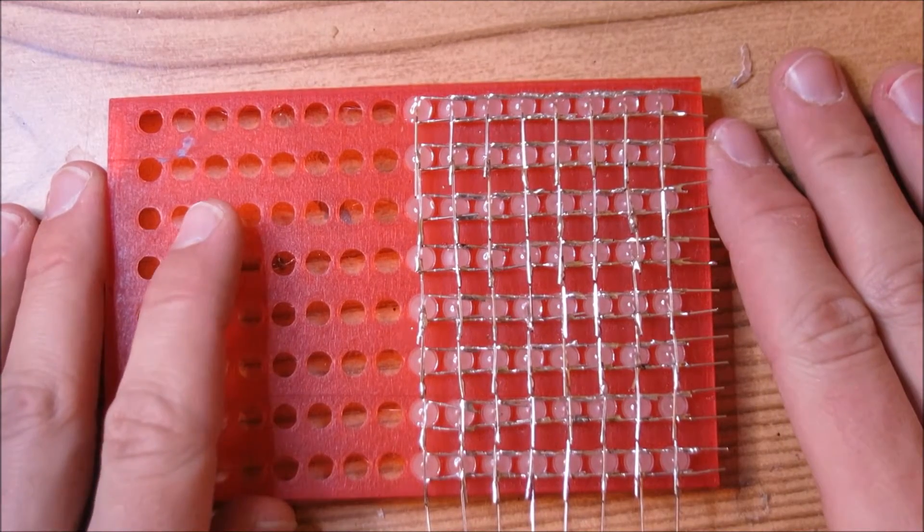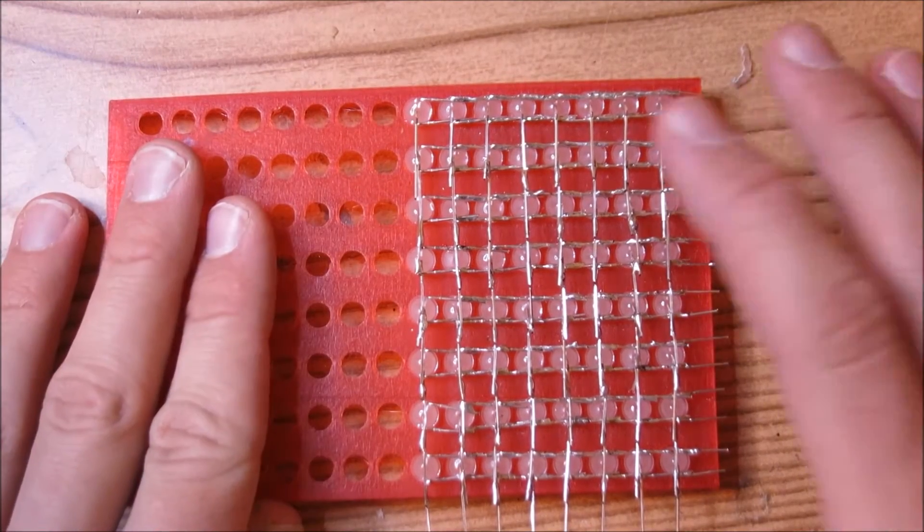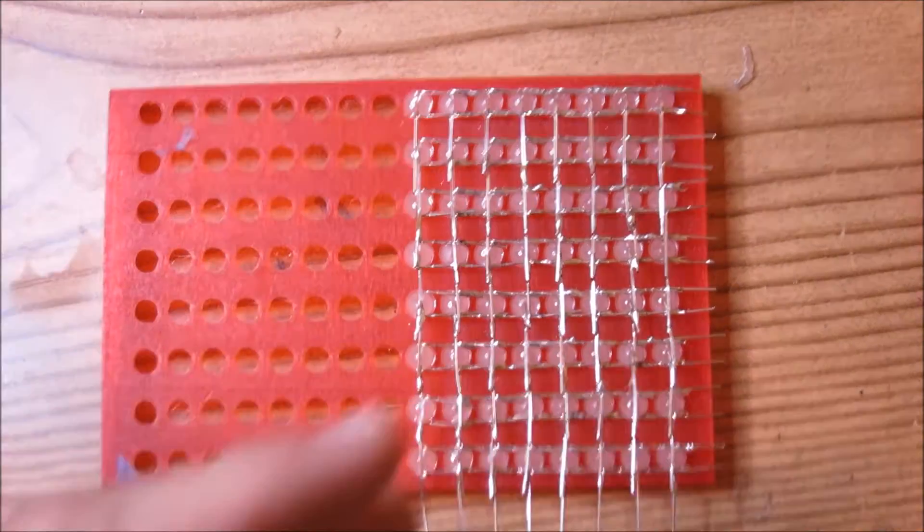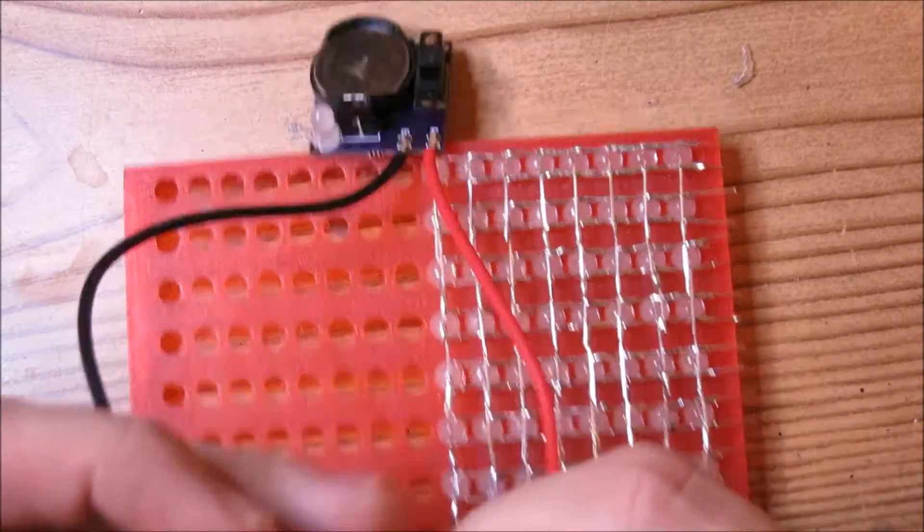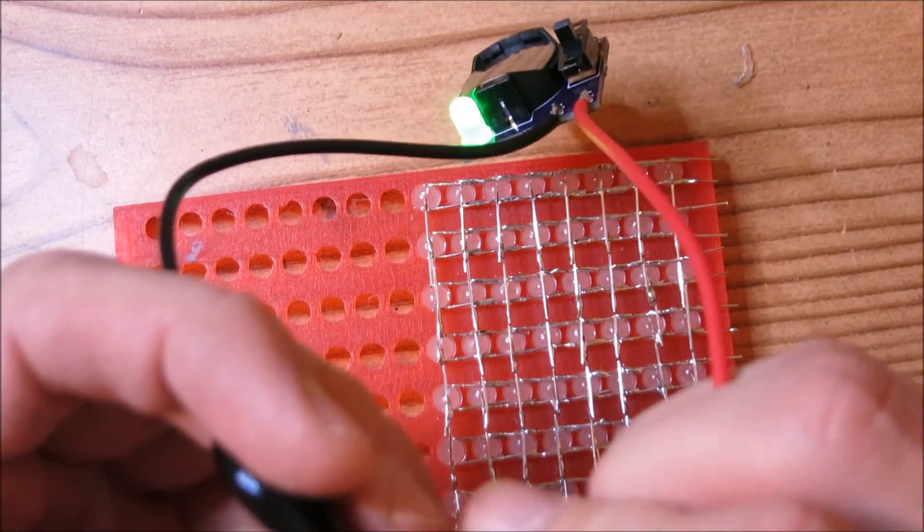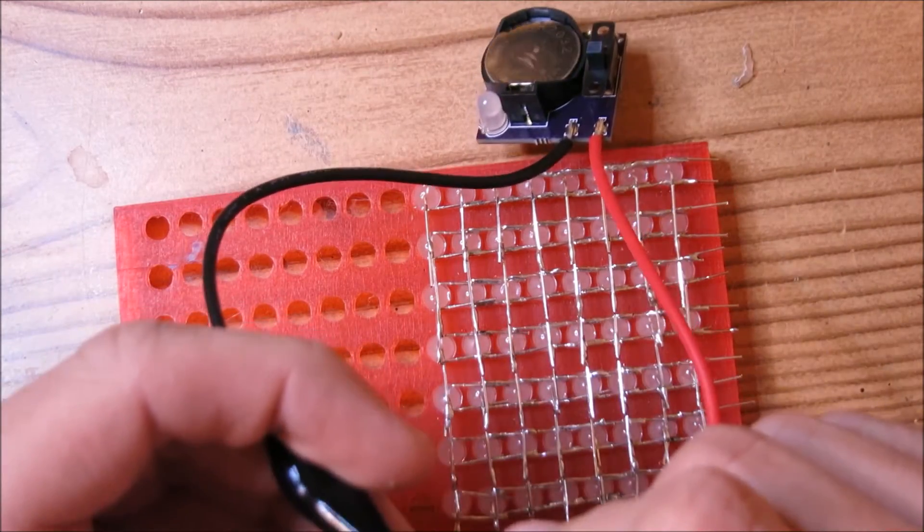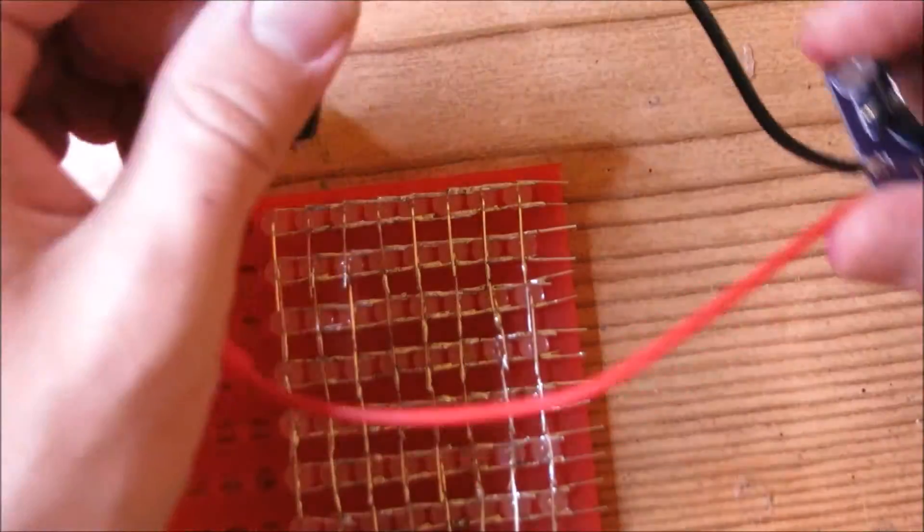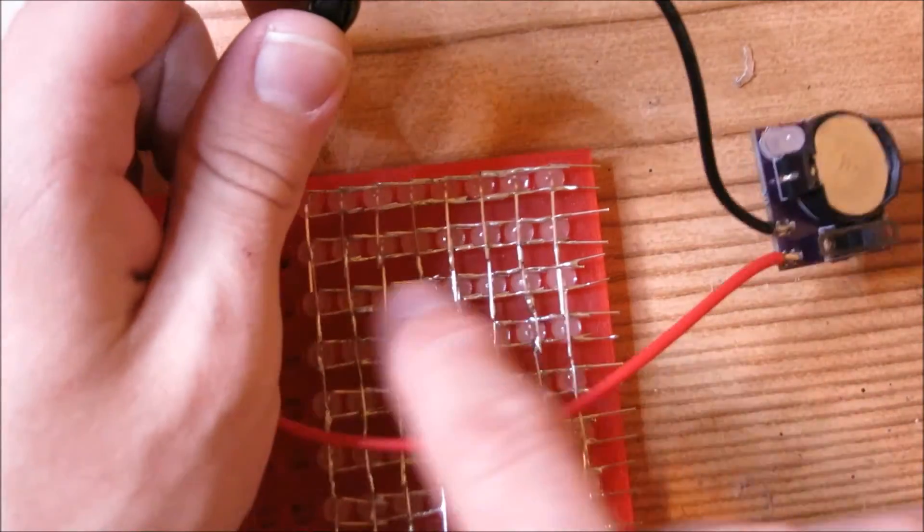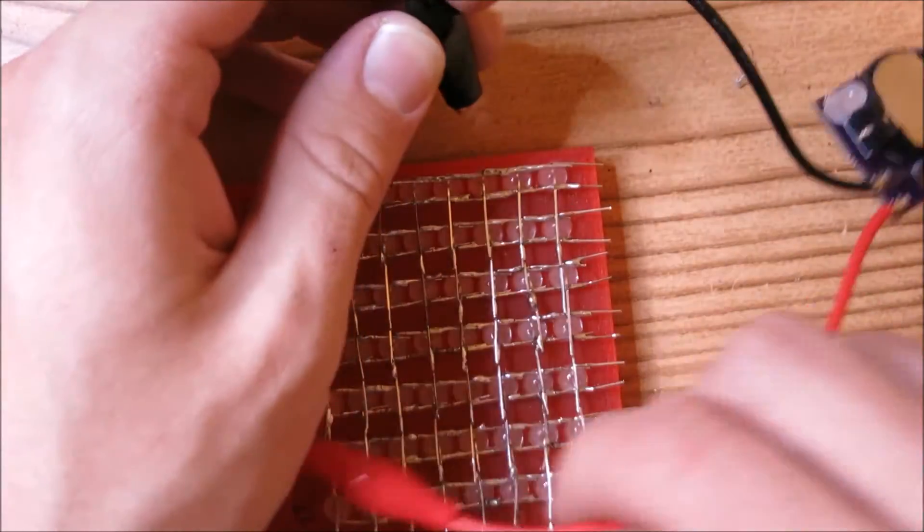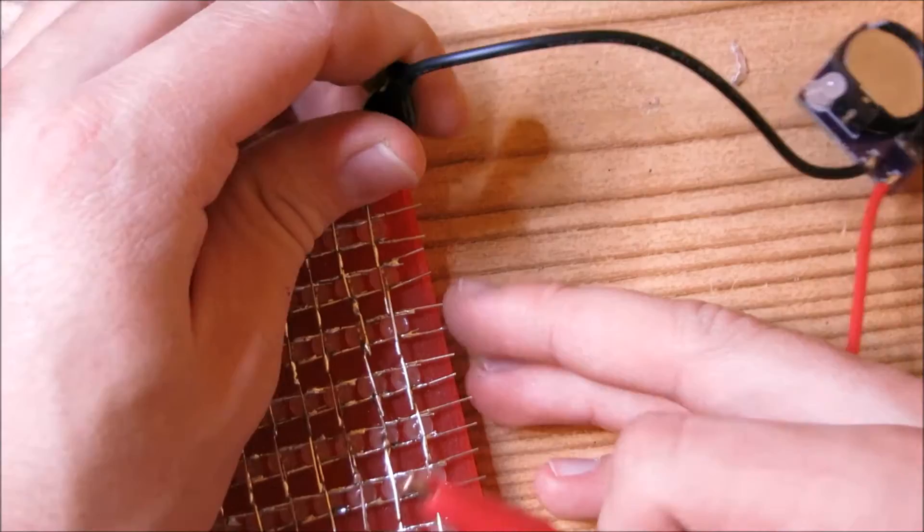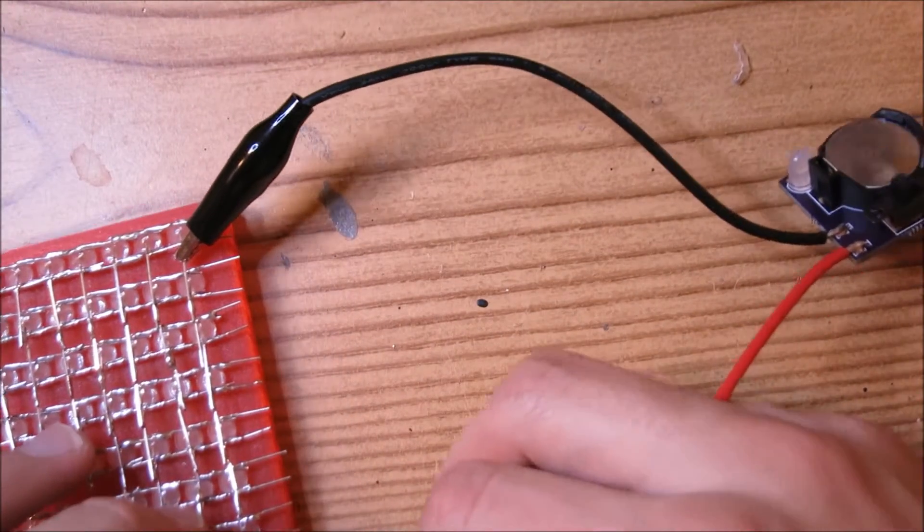So now that we have a full 8x8 LED matrix assembled, it's a good time to test to make sure that we have soldered all of these connections properly and that we haven't missed anything. So again, we're going to use our LED tester. We're going to switch it to the mode that checks for shorts, that if you short the two clips together, the LED lights up. Basically what we're going to do is for every line that goes this way, and there is eight of them, what we're going to do is we're going to clip on one lead at the top and one lead at the bottom. And the LED should light up.